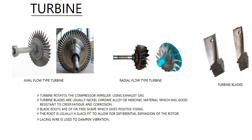The turbine rotates the compressor impeller using exhaust gas. Turbine blades are usually nickel chrome alloy or nimonic material, which has good resistance to creep, fatigue, and corrosion. Blade roots are of fir tree shape, which gives positive fixing. The root is usually a slack fit to allow for differential expansion of the rotor. Blade lacing wire is there to damp the vibration.